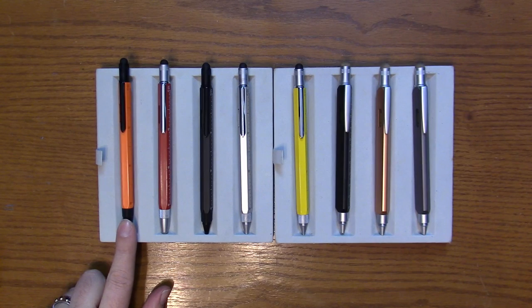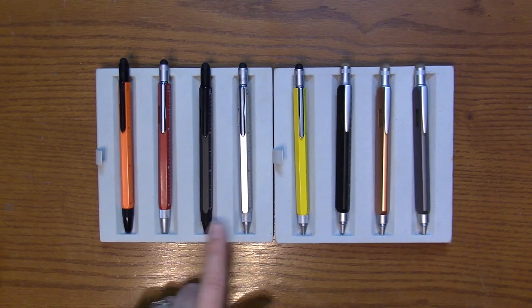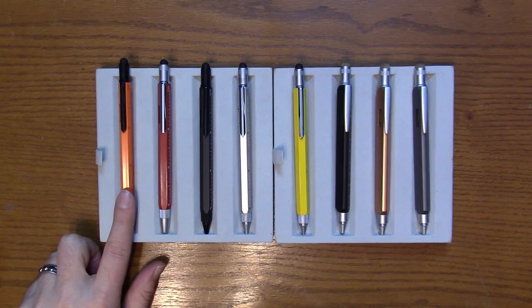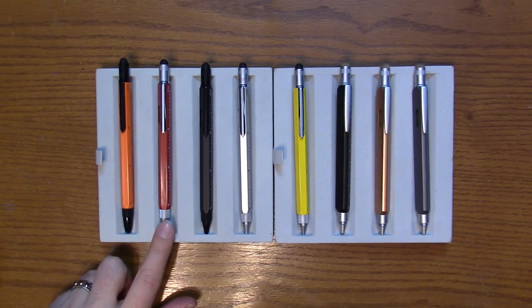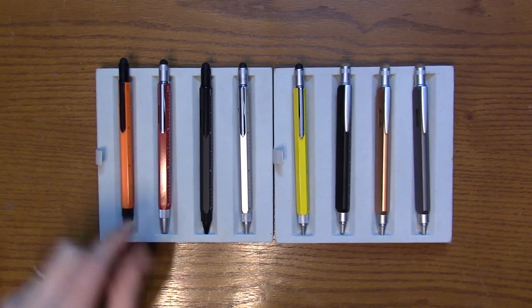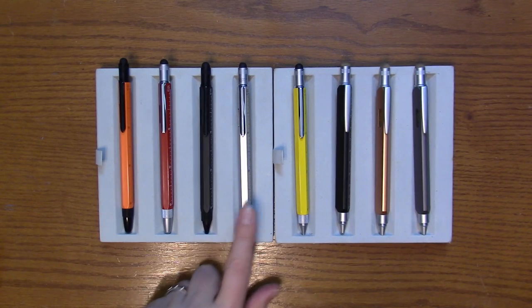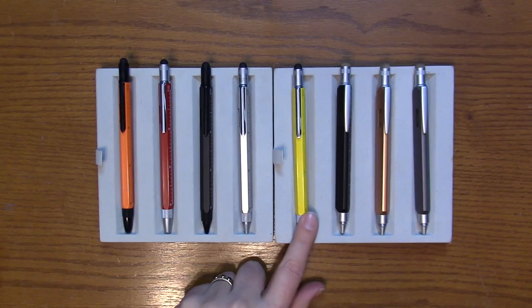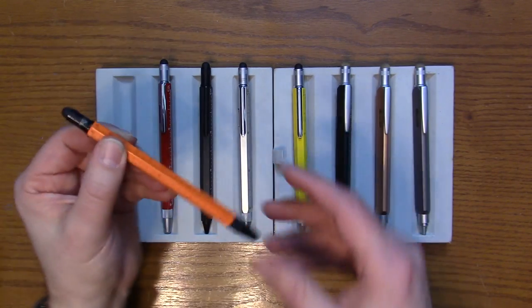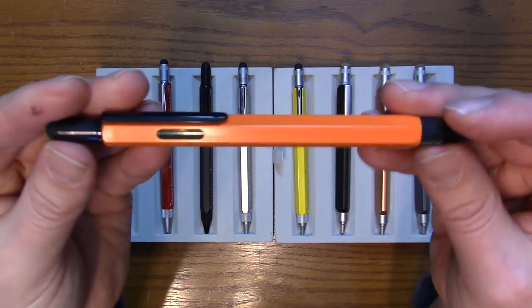Fountain pen, ballpoint, and mechanical pencil. It comes in orange with black trim, red with chrome trim, black with black, silver with chrome, and yellow with chrome trim. And let's look at the pen itself.